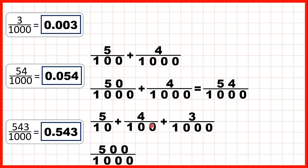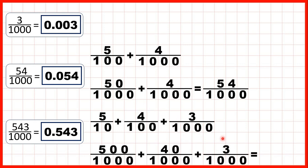Instead of adding four hundredths, we can add 40 thousandths. These fractions are equivalent because a hundred times ten is a thousand and four times ten is 40. So now we can add the three thousandths, because we now have denominators that are the same. The denominator stays the same in our answer and 500 plus 40 plus 3 is 543. That's why we can write this fraction as a decimal with five in our tenths, four in our hundredths, and three in our thousandths.